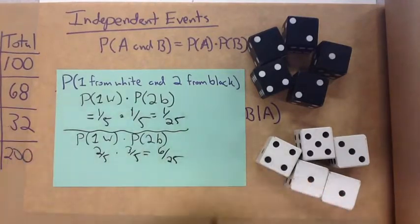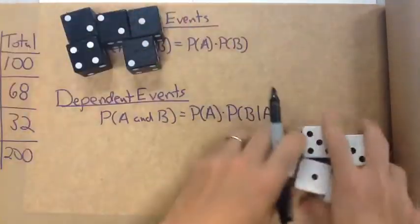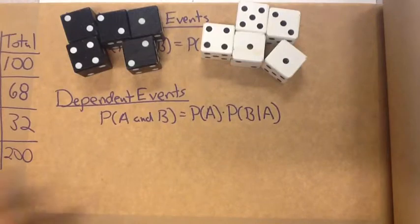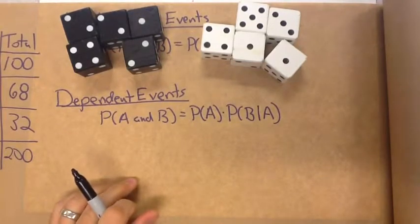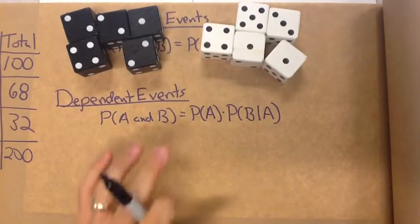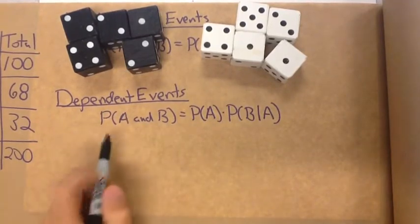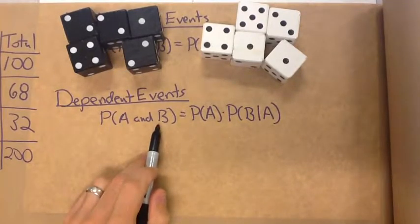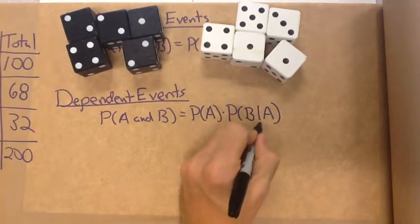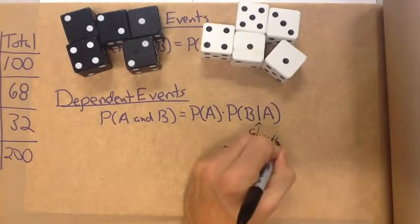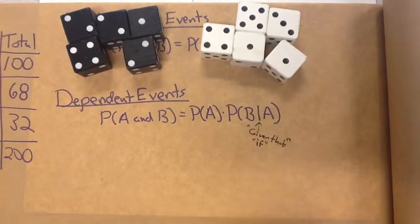That's independent. If we now look at dependent, we have that these two events are related because the dependent events are going to yield conditional probabilities. The probability of the second event is conditional on the one that came before it. So our new rule is probability of A and B is equal to the probability of A times the probability of B given that A. When we see that line, we're going to think 'given that' or you could say 'if'.